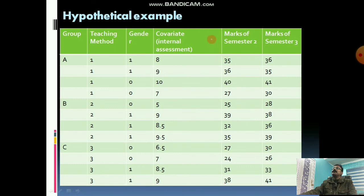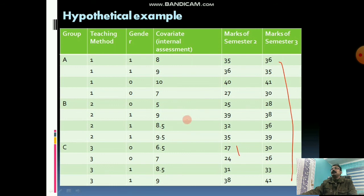This is our hypothetical example. Now before exporting this data into our software, we want to show what the assumptions are behind the application of analysis of covariance or multivariate analysis of covariance — one-way or two-way.